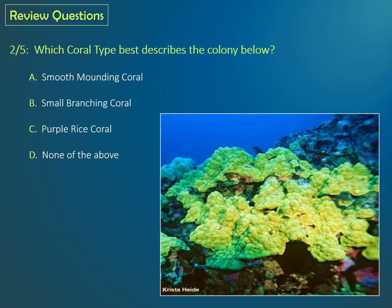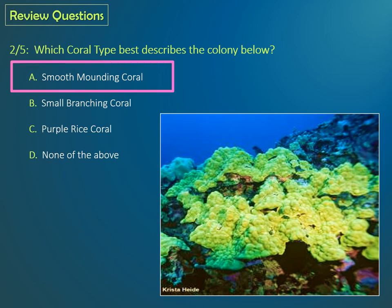Question two: Which coral type best describes this colony below? Is it A, smooth mounding? B, small branching? C, purple rice? Or D, none of the above? If you said A, smooth mounding coral, you're correct.